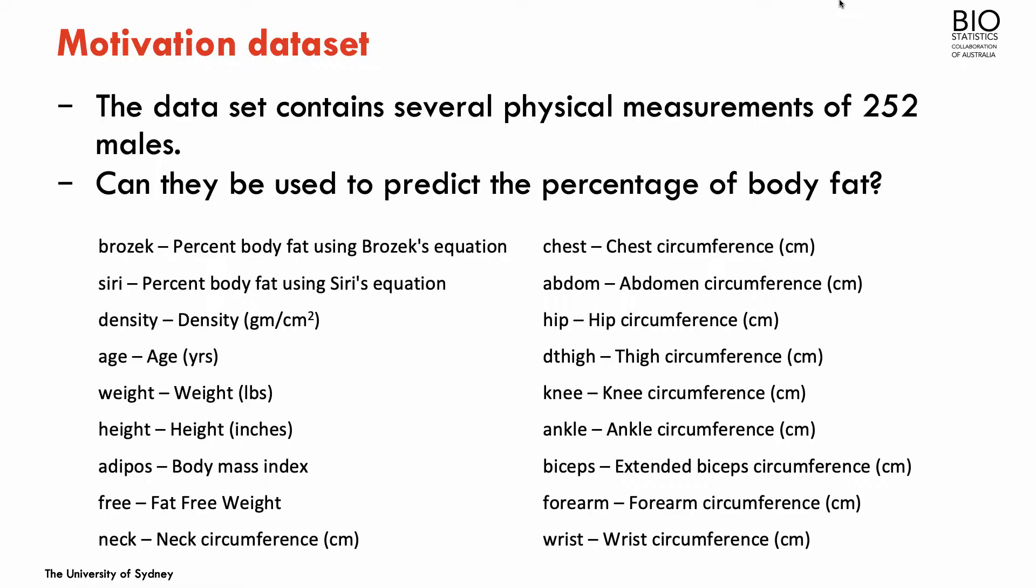So let's start with best subset selection. I'm going to use as an example a dataset that is in one of the packages of R. It's called the fat dataset. And this includes 19 variables related to anthropometrical measurements in 252 males. And the question here is, can we use several of these measurements to predict percentage of body fat?